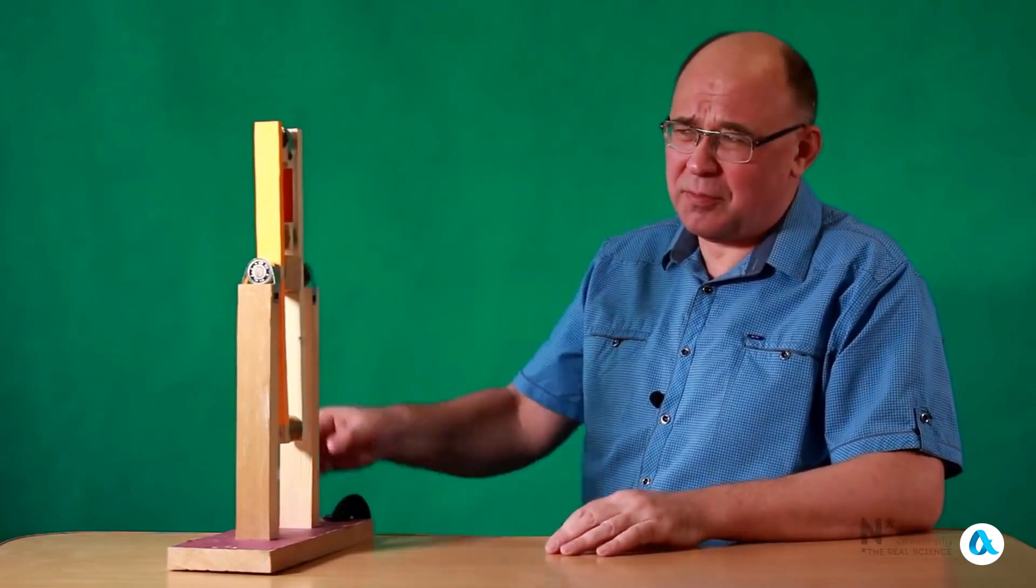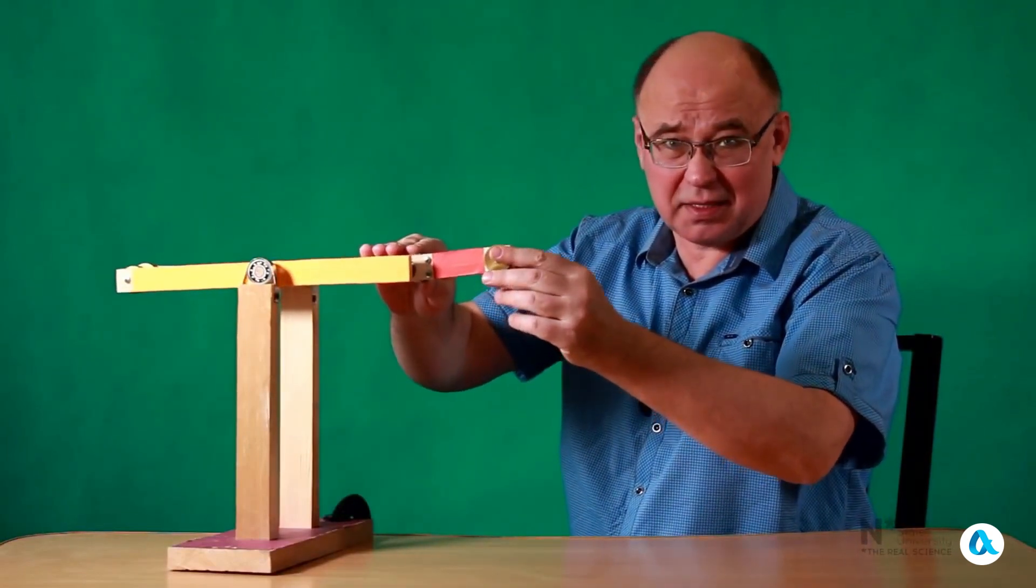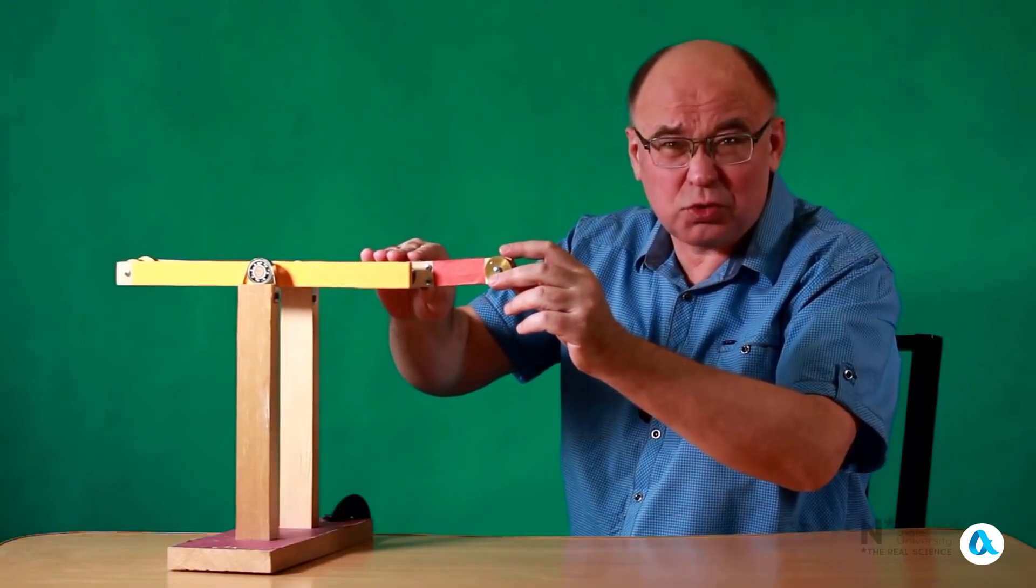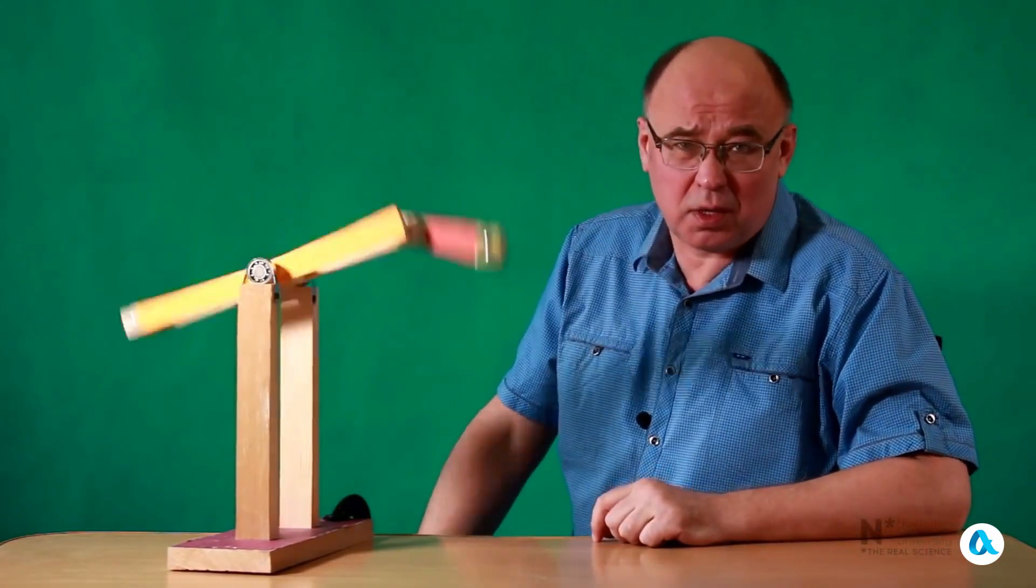Another simple type of behavior can be observed if I deflect the small pendulum outward and then spin the whole system so that the small pendulum continues to be pushed outward by the centrifugal force. Now everything rotates as a single whole, gradually slowing down due to friction.